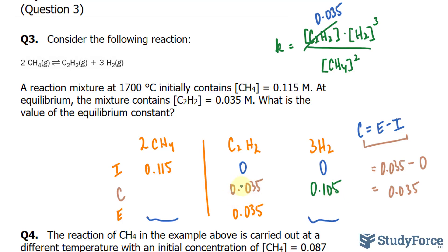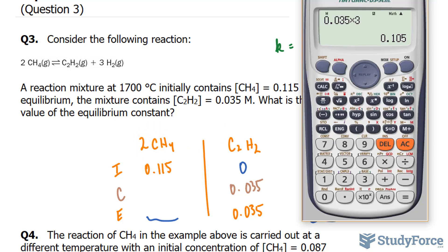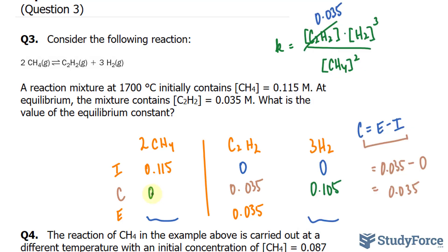And using this to find the change for CH4. Remember this is a product and that's a reactant, so whatever we get we multiply by negative 1. There's a 1 to 2 ratio, so we multiply this by 2. 0.035 times 2 gives us this number, we multiply by negative 1, we end up with negative 0.07. You only do that if you're comparing products and reactants or vice versa.